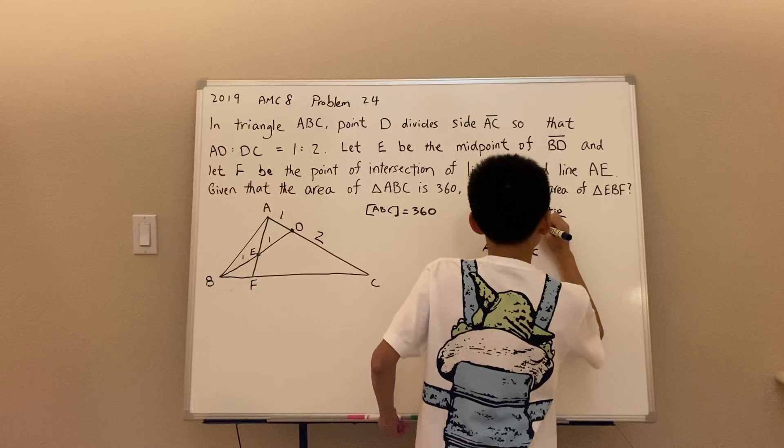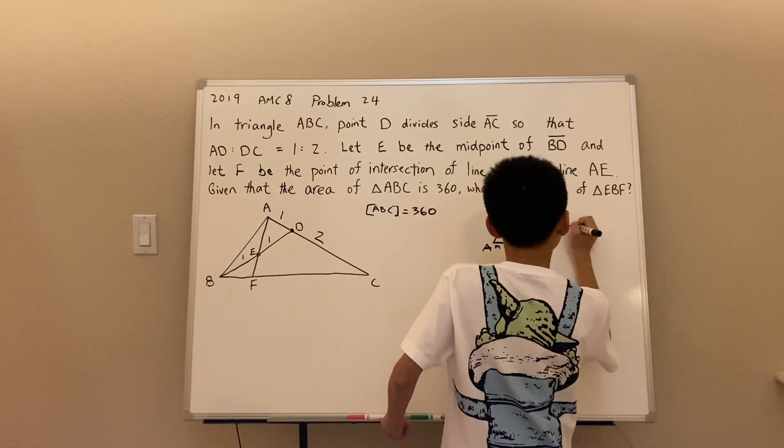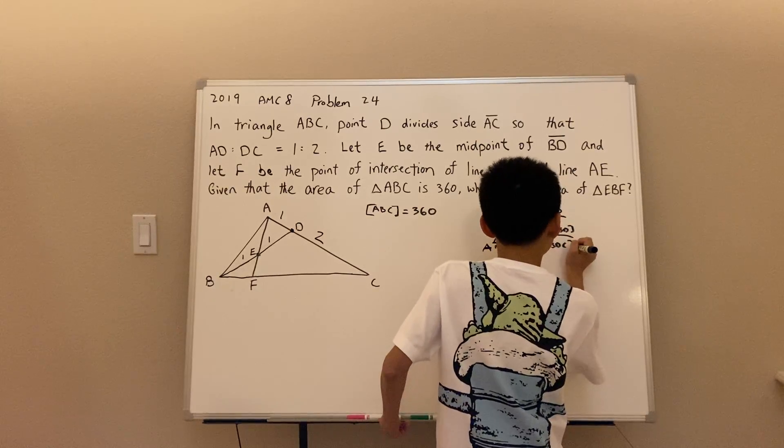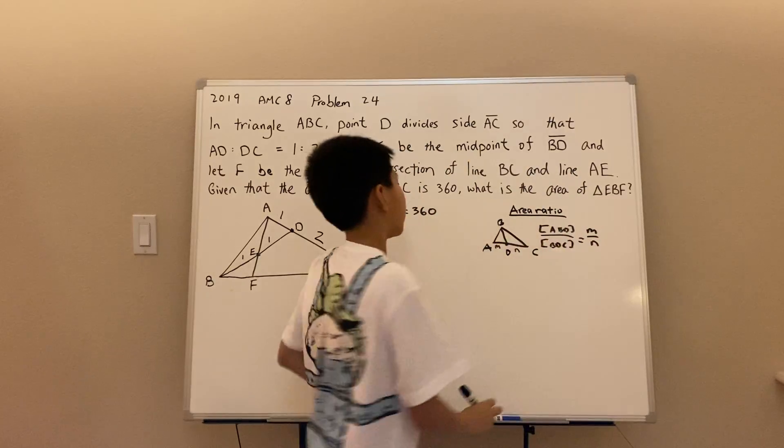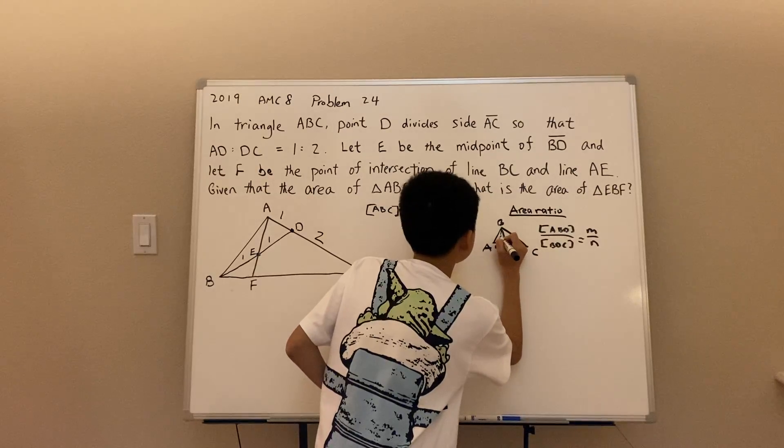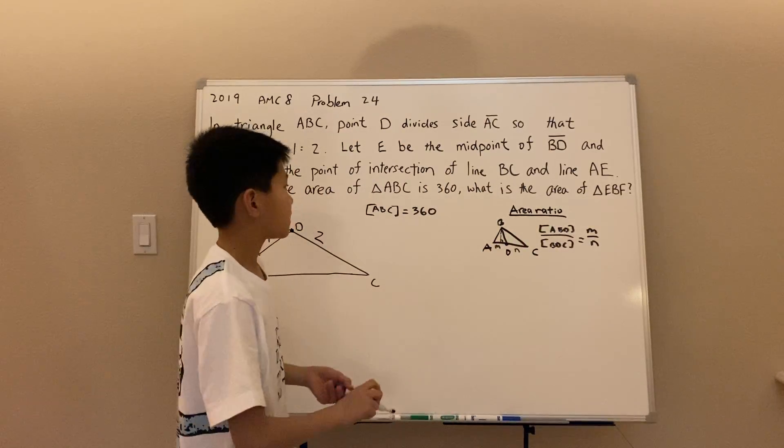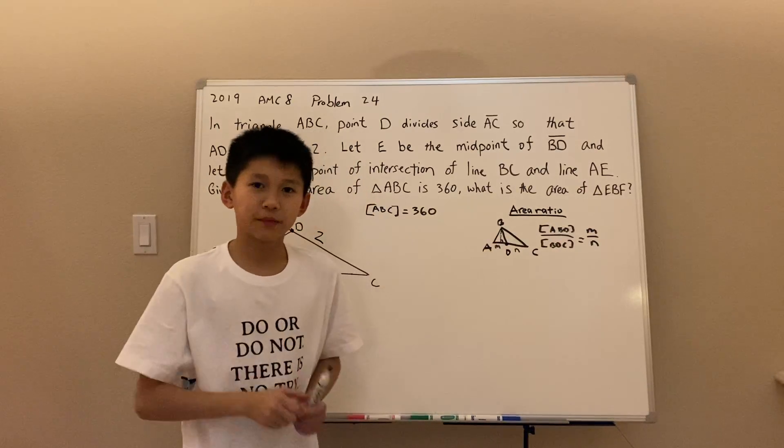the area of triangle ABD over the area of triangle BDC is simply M over N. And this is because the height of the two triangles are the same. So the ratio of the area is just M over N, the ratio of the bases.